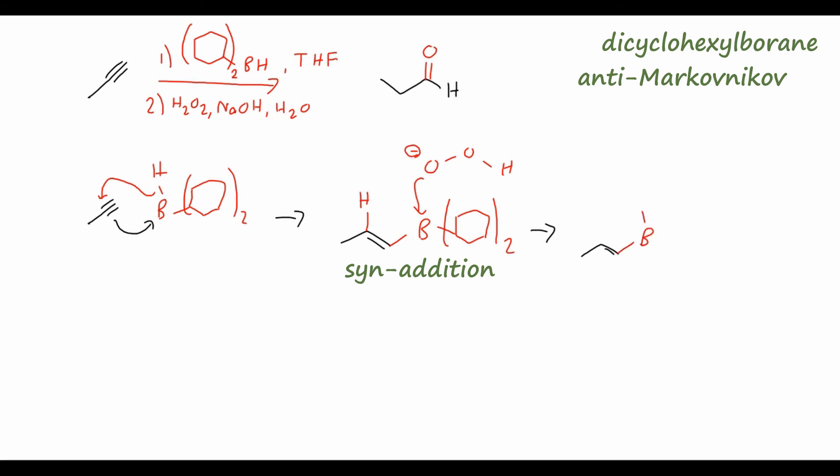If you remember, this boron-carbon bond to the substrate will swing over to attack the oxygen, pushing off this other OH group, and giving us this rearranged product where we now have that oxygen bonded to the alkene group.